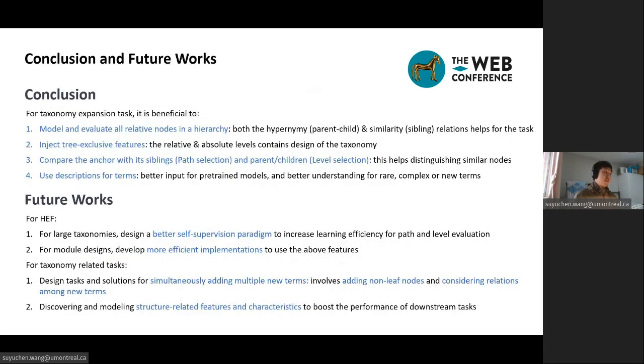And now we come to conclusion and future works. For conclusion, for taxonomy expansion task, it's beneficial to model and evaluate all relative nodes in a hierarchy, because both the hypernymy parent-child and similarity among sibling relations helps for the task. Second, it's beneficial to inject tree-exclusive features, the relative and absolute levels, contains design of the taxonomy. Third, it is beneficial to compare the anchor with its sibling and parent-children, that is, path selection and level selection. This helps distinguish similar nodes. And fourth, it is beneficial to use descriptions for terms. It is a better input for pre-trained models and better understanding for rare and complex or new terms.